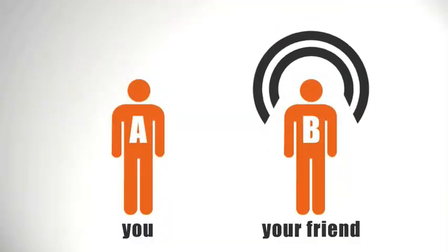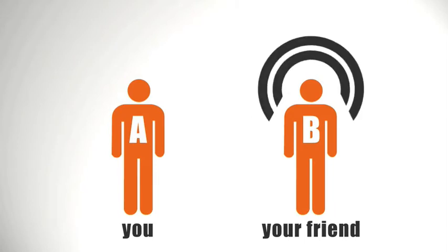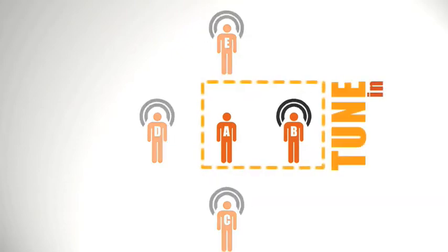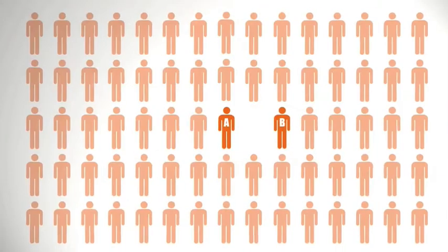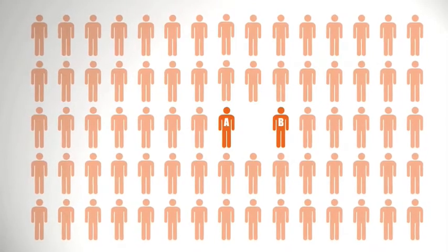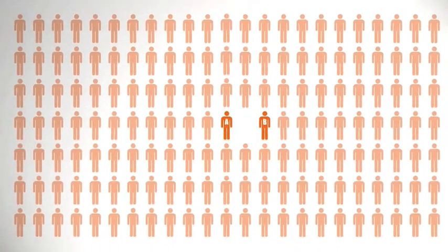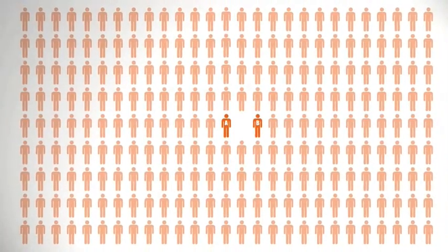In the new ambient model, all your contacts are constantly broadcasting information they think their social network may be interested in. So if you want to know what your friends are up to, you simply tune into, or tune out of, their updates. You hear only what you choose to hear. Everyone else's broadcasts are just ambient noise until you decide to listen in.